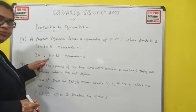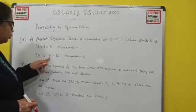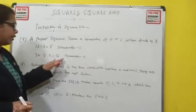36 divided by 3, which is 12, and remainder is 0.